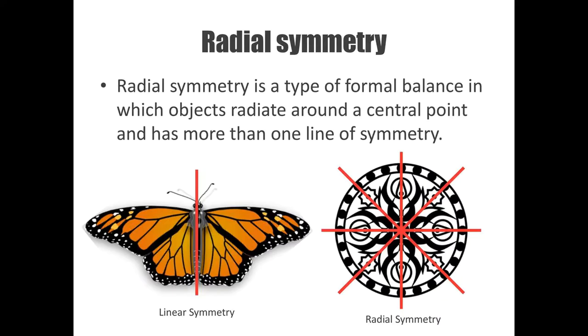What is radial symmetry? Radial symmetry is a type of formal balance in which objects radiate around a central point and has more than one line of symmetry.